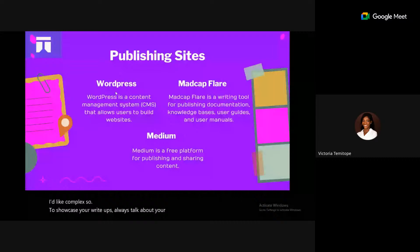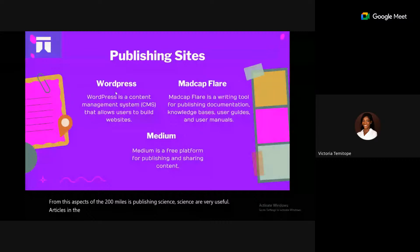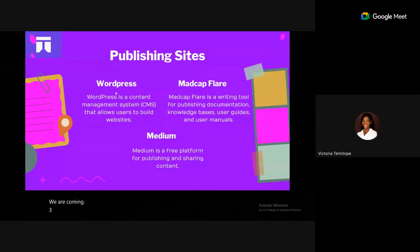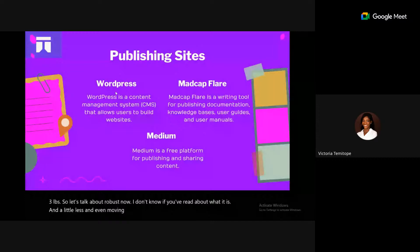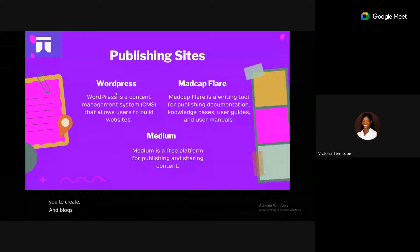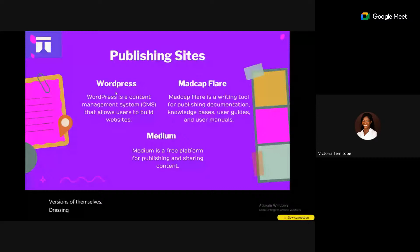Publishing sites are useful for posting articles and documentation, and can even serve as writing samples. WordPress is a content management system that allows users to build websites and blogs. It's open source and free, though some features are paid. It's very flexible, especially if you don't have coding knowledge and want to own a blog to establish yourself as an expert.